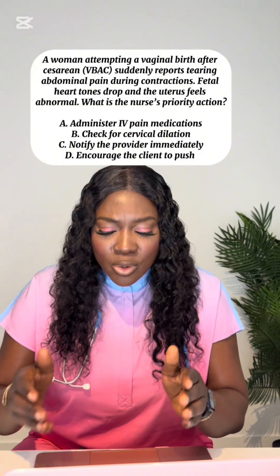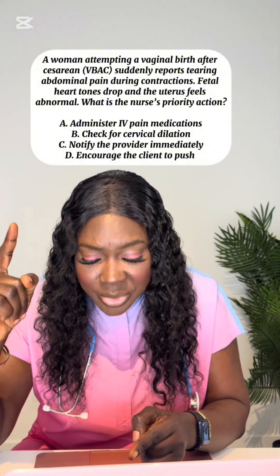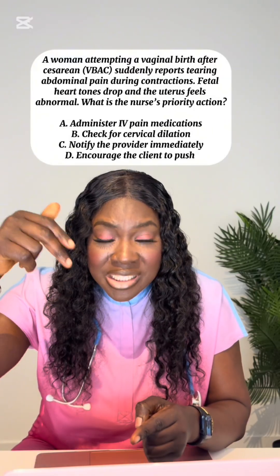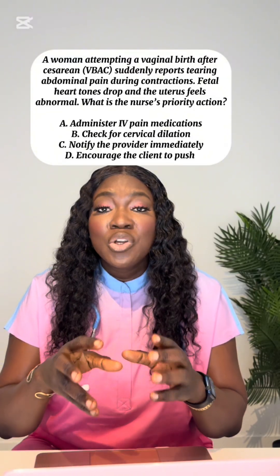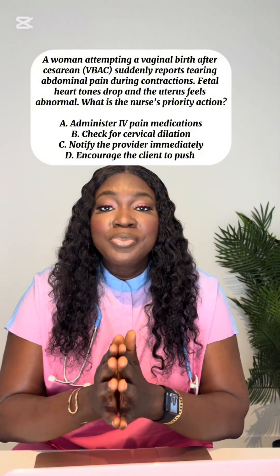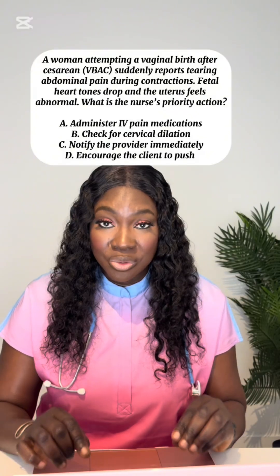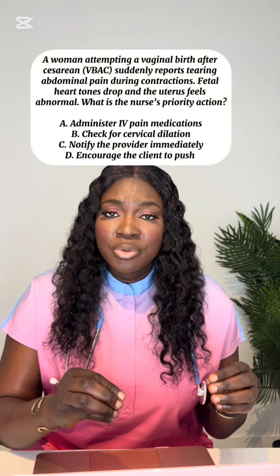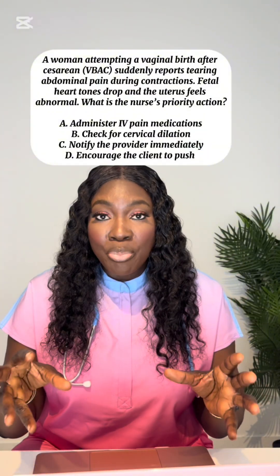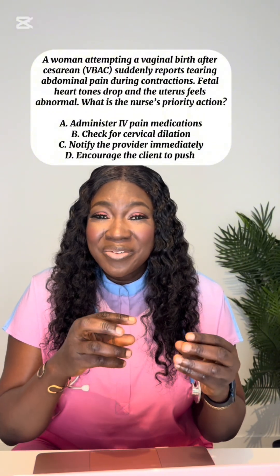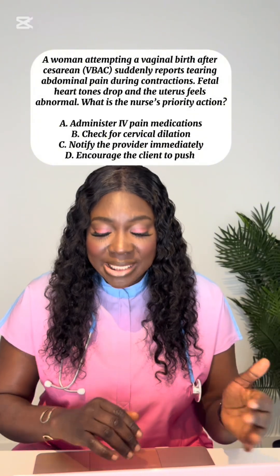Look at the symptoms: she reports tearing abdominal pain during contractions, the fetal heart rate is down, and the uterus feels abnormal. This is a classic sign of uterine rupture, which is very life-threatening and immediate action must be taken. Uterine rupture is when the muscle wall of the uterus tears open — that's why she feels tearing abdominal pain.